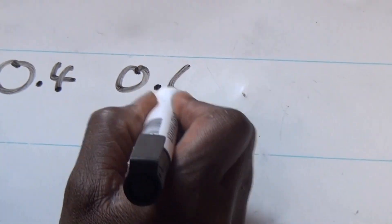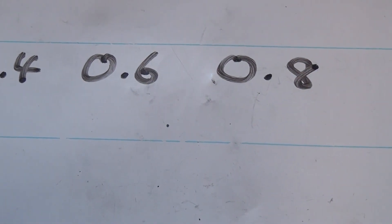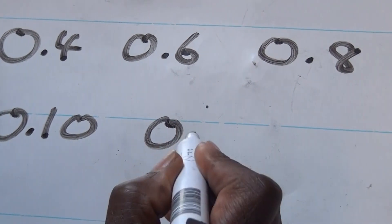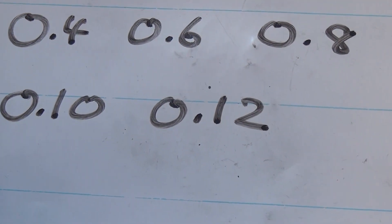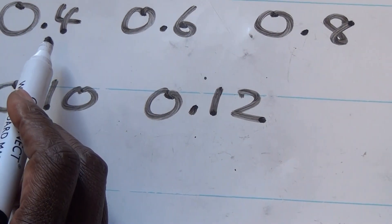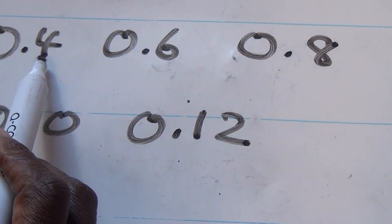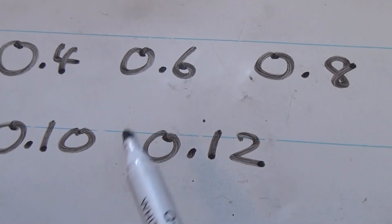The problem that the children have can be seen when we write their solution down: 0.4 the first term, 0.6 the second term, 0.8 the third term, their fourth term was 0.10, and their fifth term was 0.12. Their idea is that they are basically adding 2 to these numbers. When they add 2 to 4, they get something that looks like 0.6.